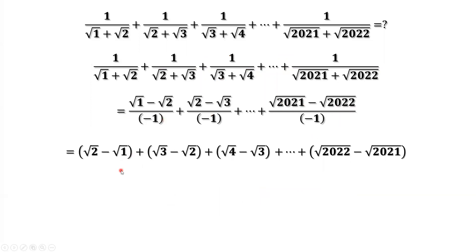Now look at this — do we have any pattern here? Let me mark it. If we consider the sum of the first two terms, we can cancel the square root of 2 terms. If we consider three terms, the negative square root of 3 and positive square root of 3 cancel as well. You can see the telescoping pattern: in the first group the second part cancels with the first part of the next group. Continuing this process, everything cancels except the very first part of the first term and the last part of the last term.